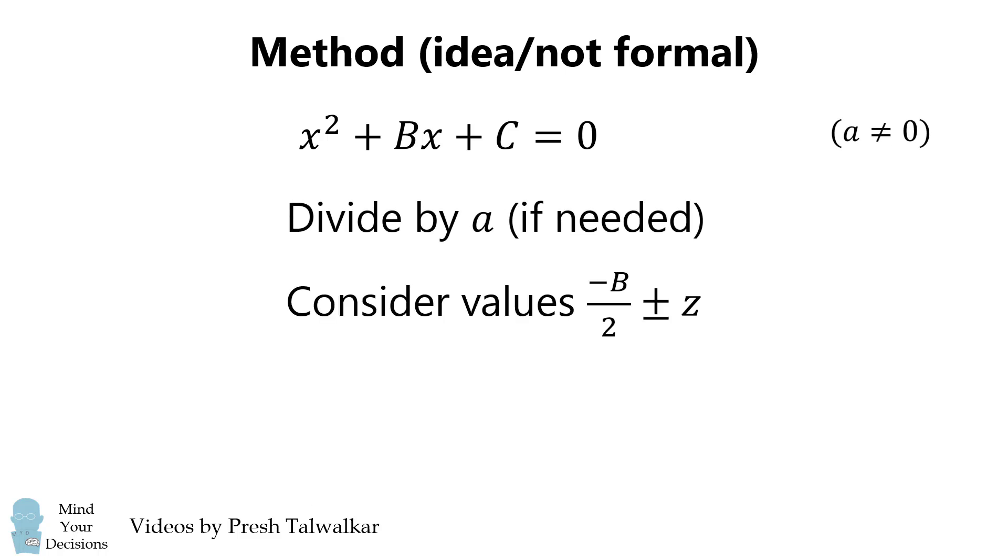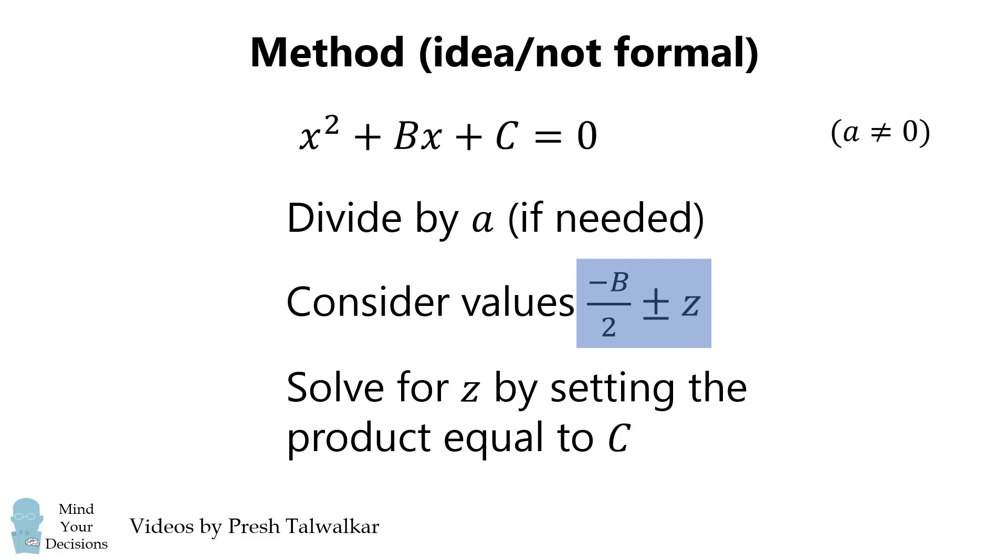So now let's recap. We start with the general quadratic equation, and we'll divide it by a if needed, so that the coefficient on x squared is equal to 1. We'll end up with a quadratic equation that'll be x squared plus capital Bx plus C is equal to 0. We then consider values of negative B over 2 plus or minus Z, and then we'll solve for Z by setting the product equal to C. We will thus end up with two numbers that have the proper sum and the proper product, and therefore there will be roots to the original quadratic equation.